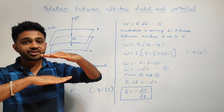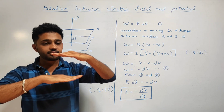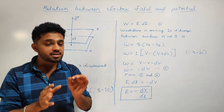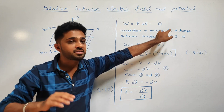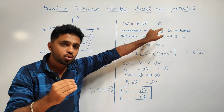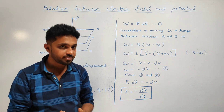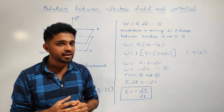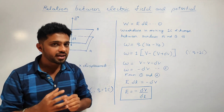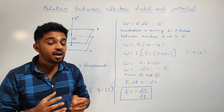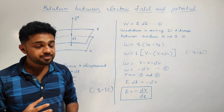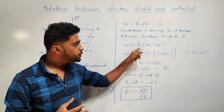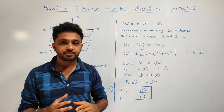We have two surfaces A and B. We move a unit positive charge — 1 C of charge — between them. The work done W is equal to Q into (VA minus VB).